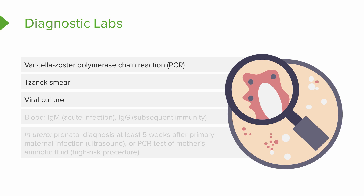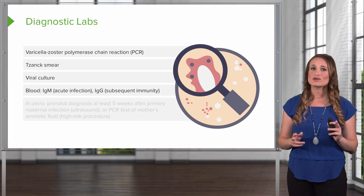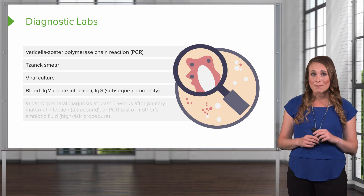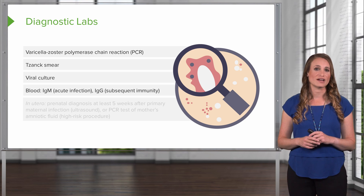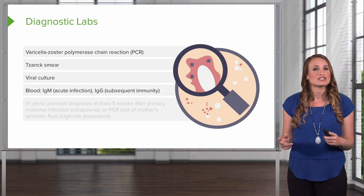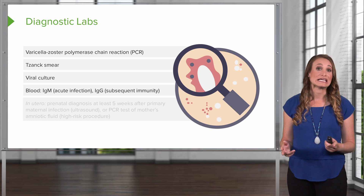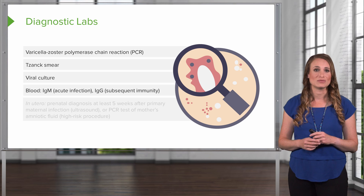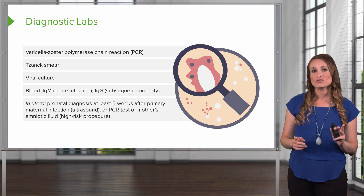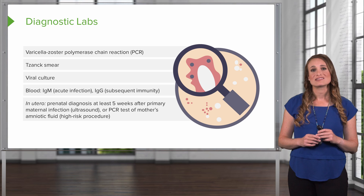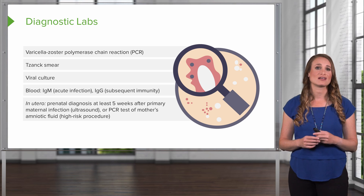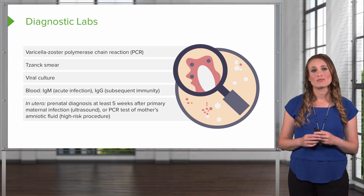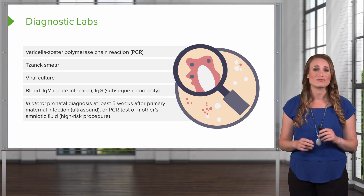You can also do a viral culture, though this takes time to get results. Blood work can be done, including an IgM — your antibody that shows up early with acute infection — and IgG, which is the titer made later and shows subsequent immunity. In utero testing should be done at least five weeks after a primary maternal infection and can be performed via ultrasound, or a PCR test of the mother's amniotic fluid. Keep in mind that amniocentesis is a high-risk procedure.